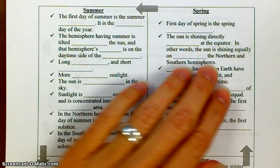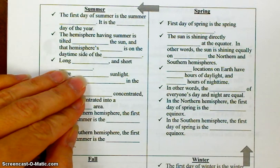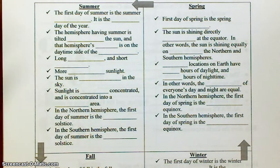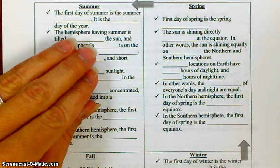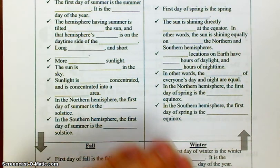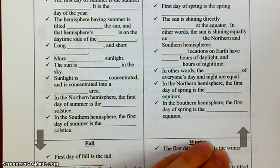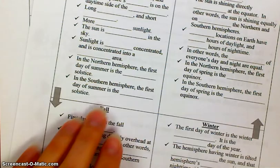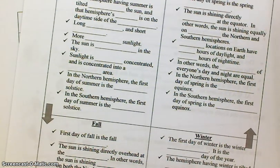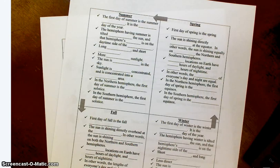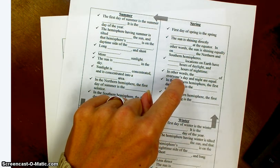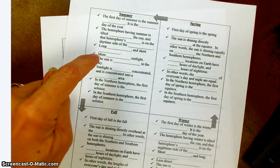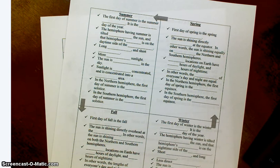After spring comes summer, and the whole cycle repeats. Summer is basically the season opposite of winter, and fall is basically the season opposite of spring. Fall and spring are about six months apart, and summer and winter are about six months apart.